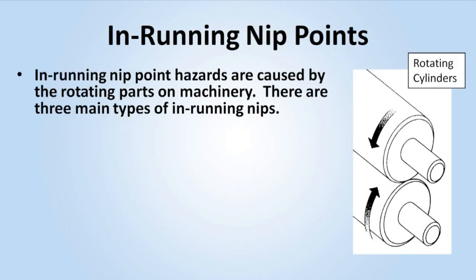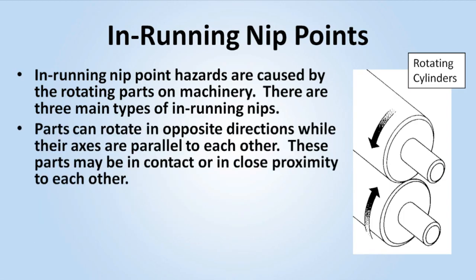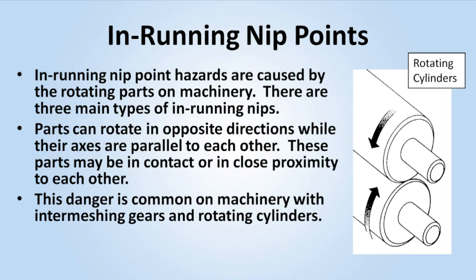In-running nip point hazards are caused by the rotating parts on machinery. There are three main types of in-running nips. Parts can rotate in opposite directions while their axes are parallel to each other. These parts may be in contact, producing a nip point, or in close proximity to each other, where the stock fed between the rolls produces the nip points. This danger is common on machinery with intermeshing gears and rotating cylinders.